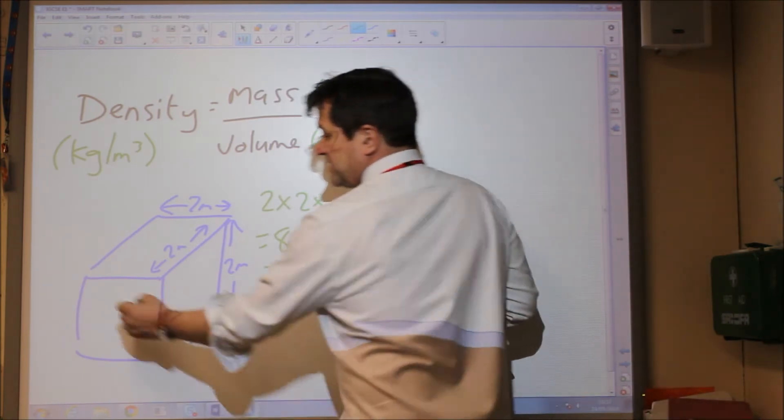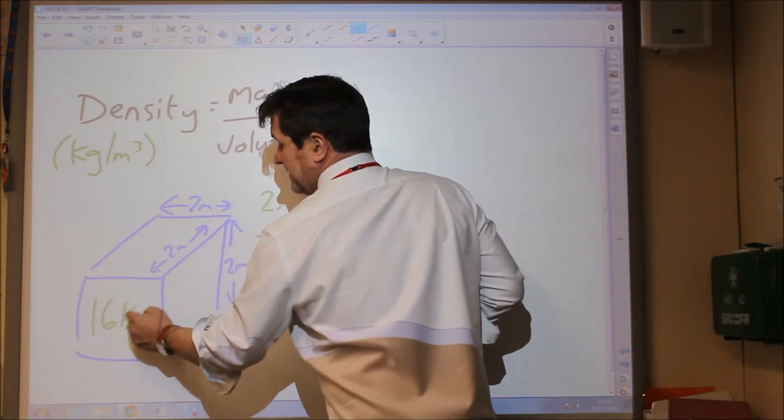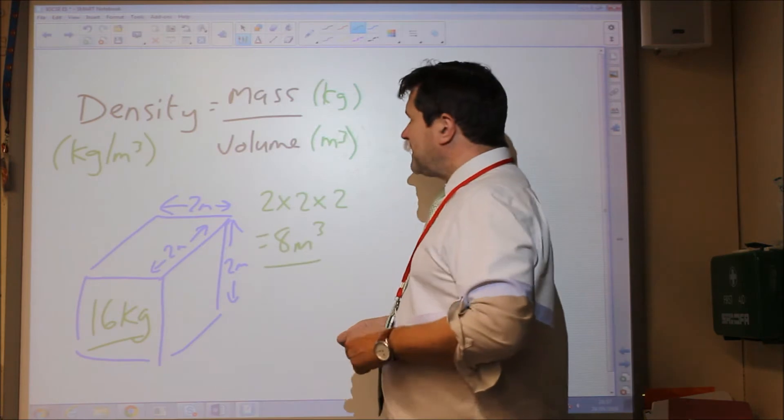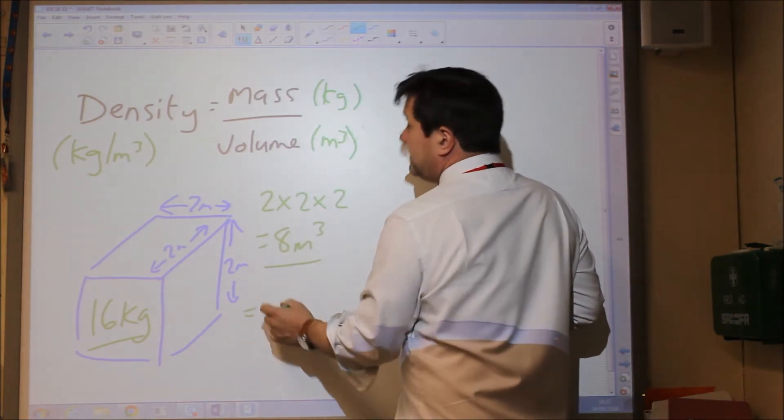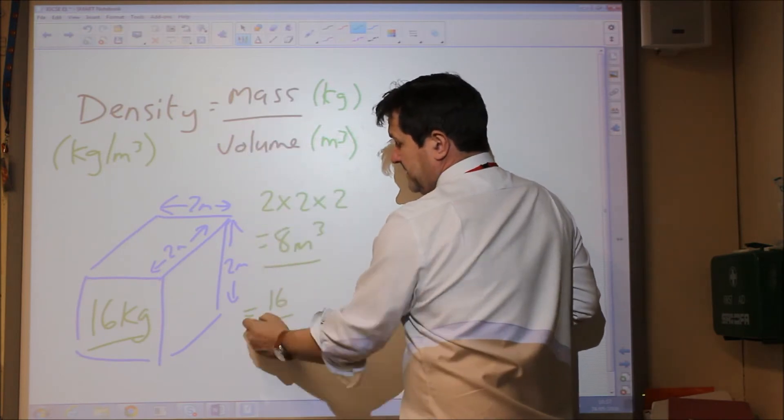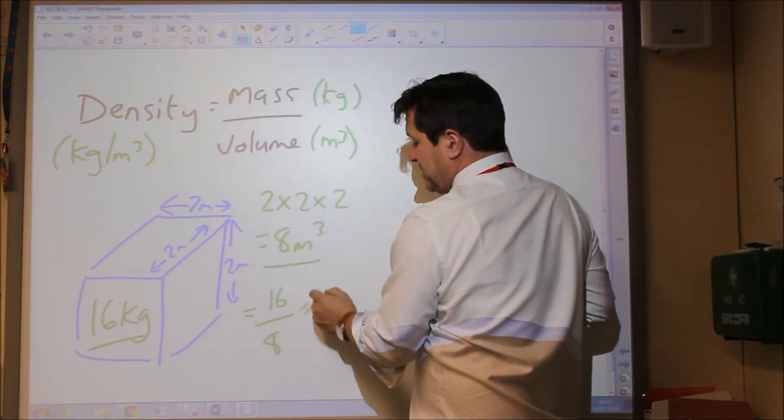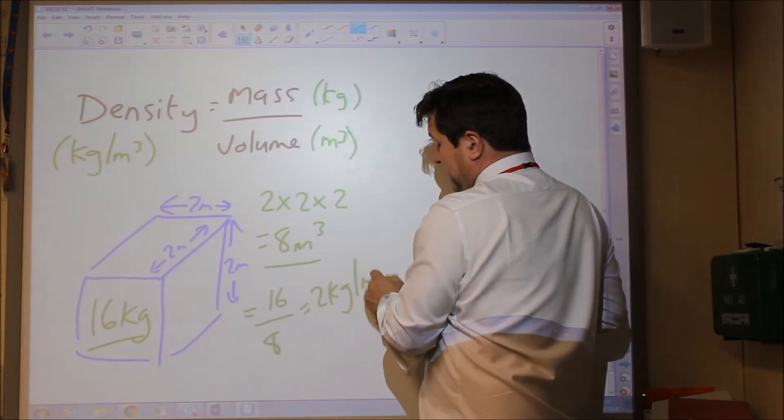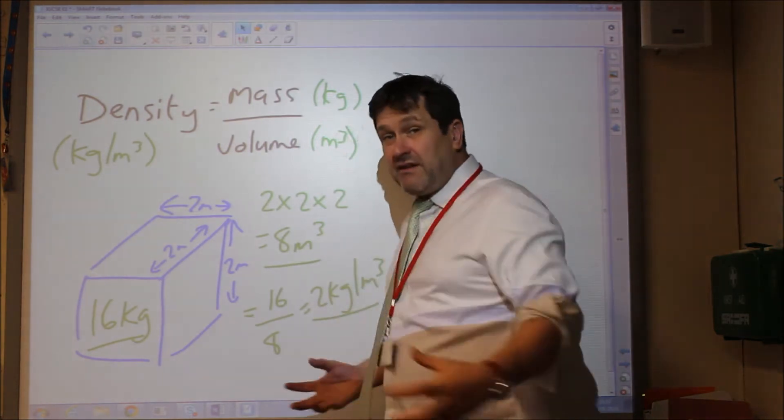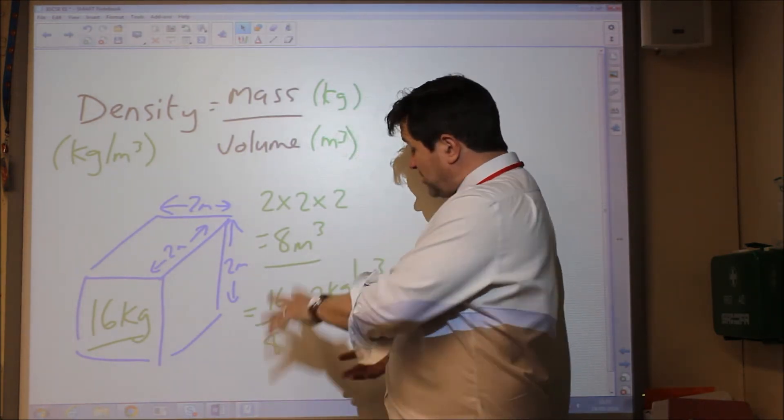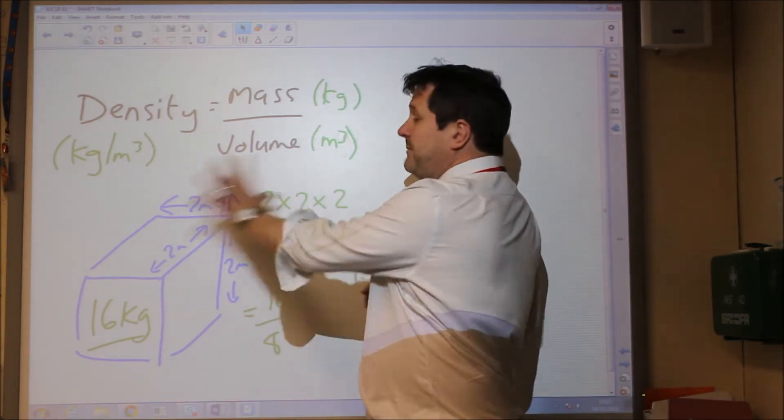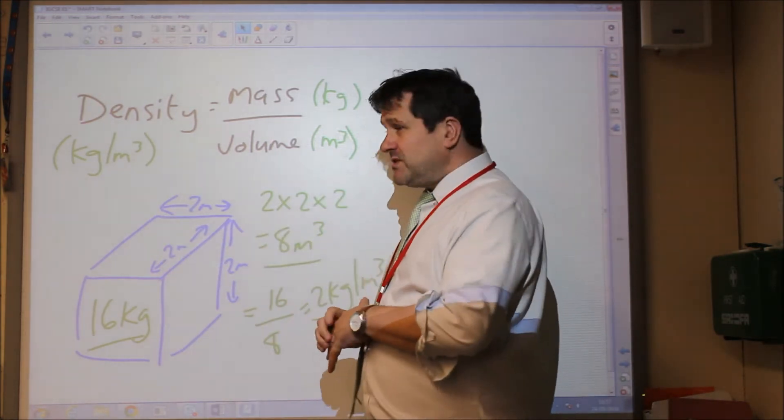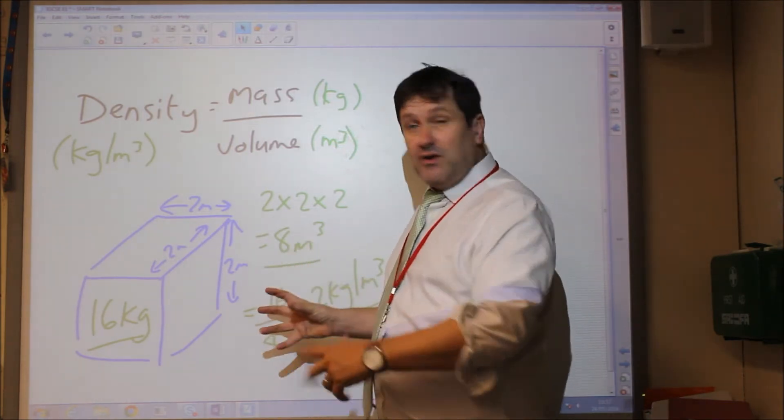then we could say that the density of this is mass divided by volume, which is two kilograms per metre cubed. That's a very, very low density. That's just twice that of air. So that would be a simple way of working out density, but unfortunately the problems are not always so straightforward.